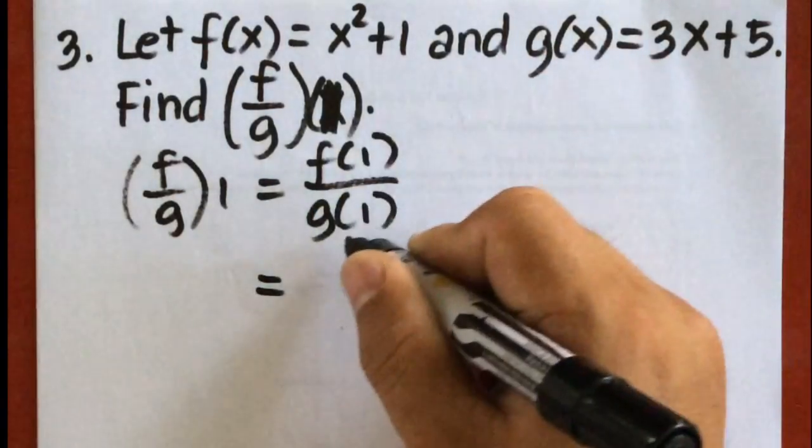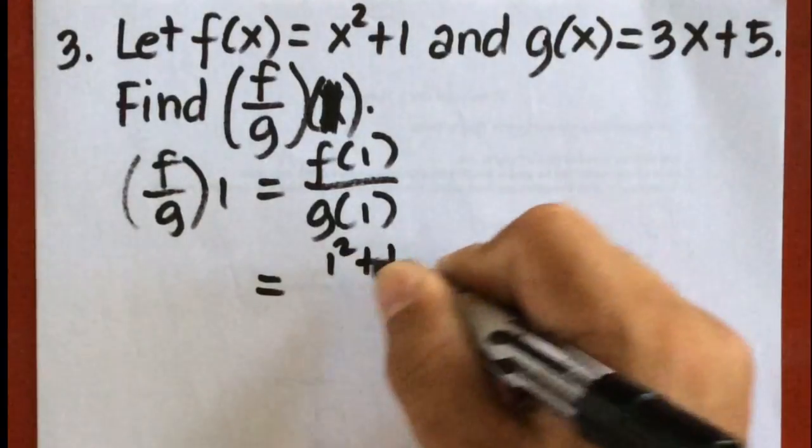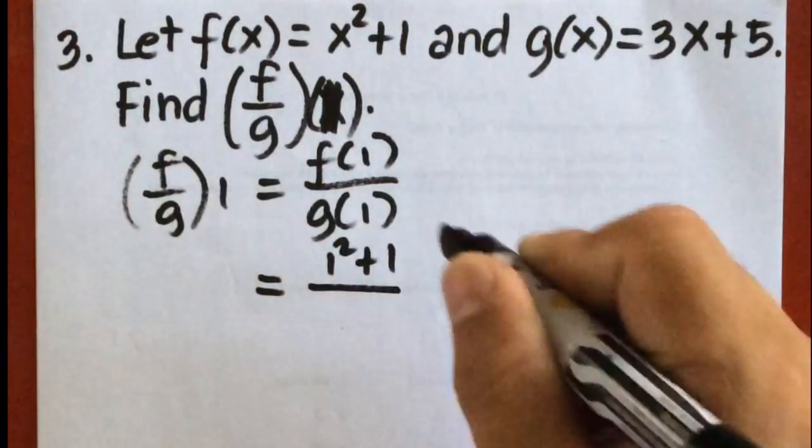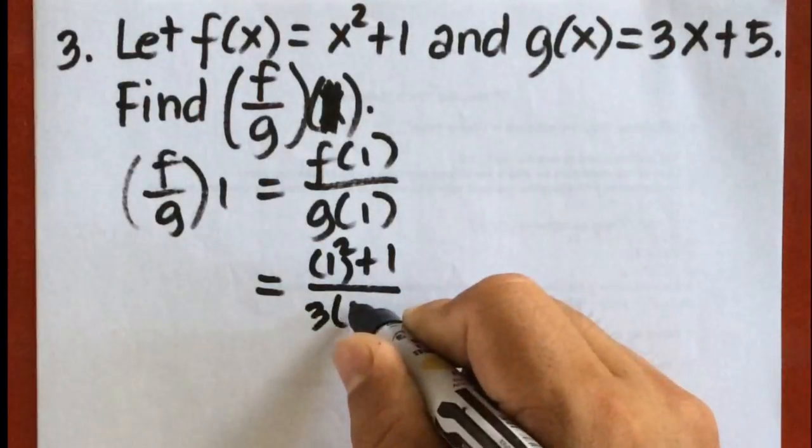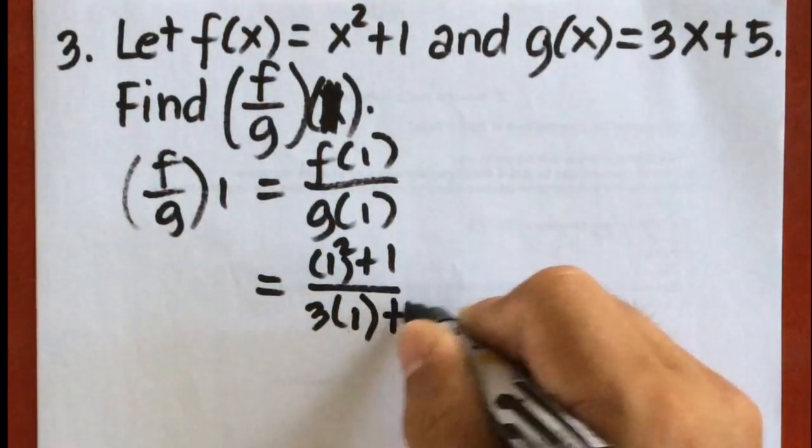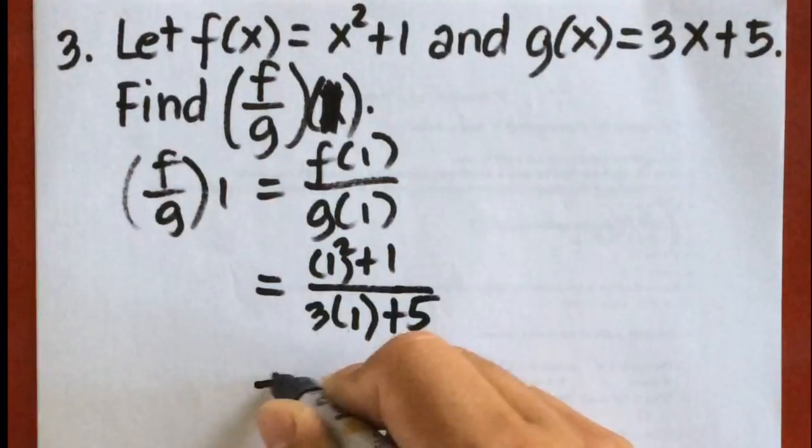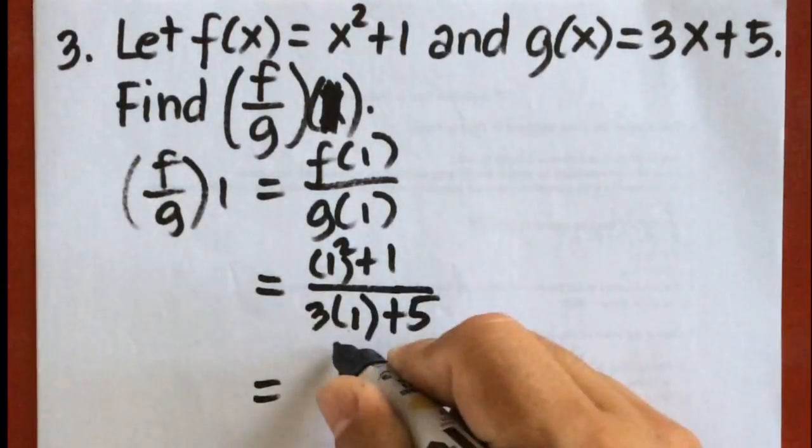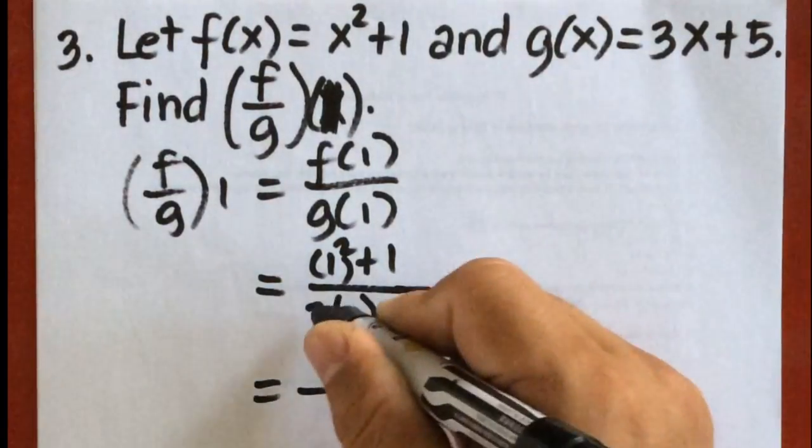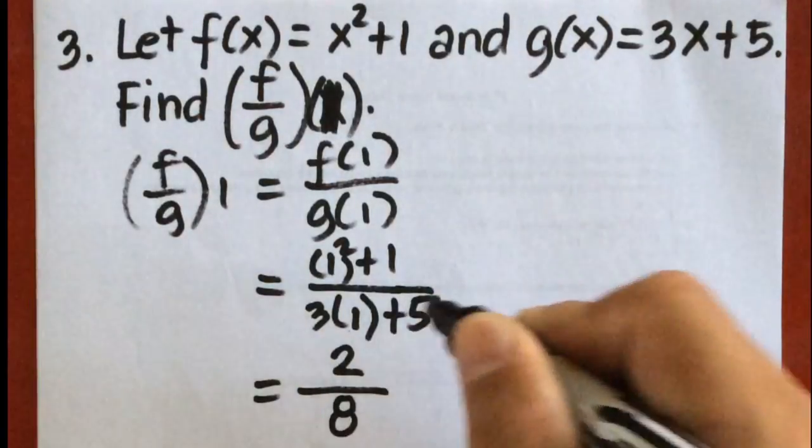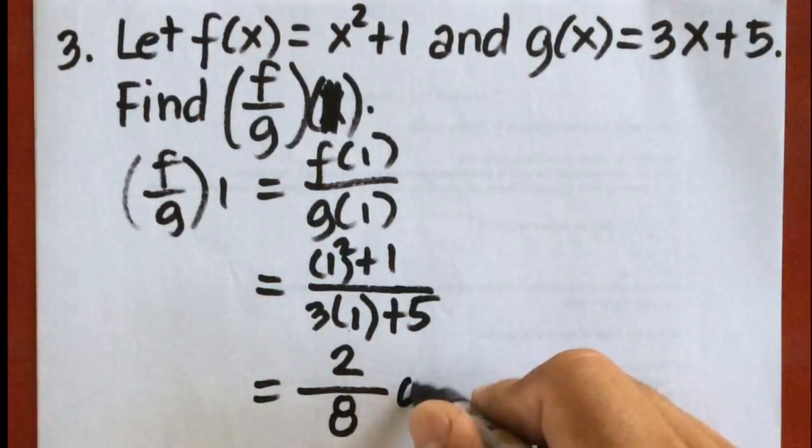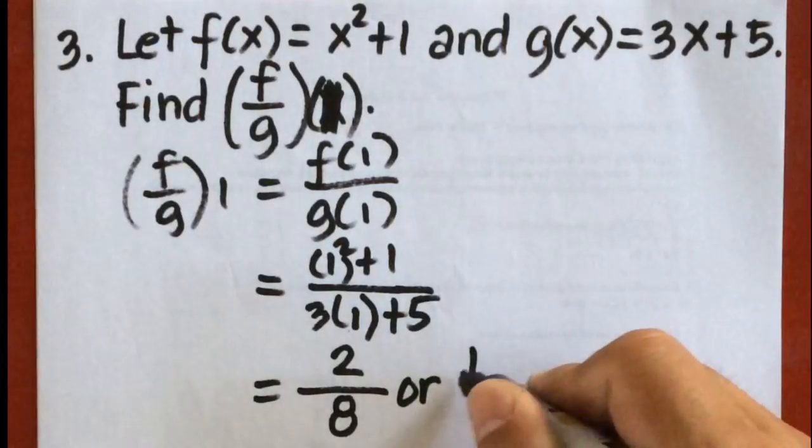So we're going to have 1 squared plus 1 divided by 3 times 1 plus 5. 1 squared is 1 plus 1, that will be 2 over 3 times 1 is 3 plus 5 is 8. This is 2 over 8. And if we're going to simplify this, this is equivalent to 1 fourth.